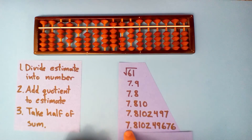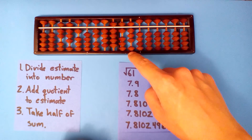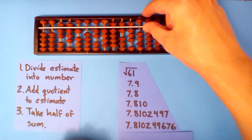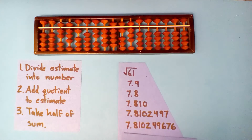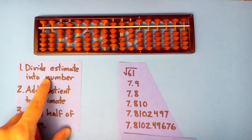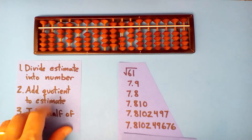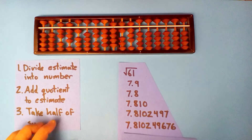The calculator answer is 7.810249676. So you can see this very last decimal is good — we would have rounded that 6 up to get 8. So it's not perfect, but it is very, very good. Try it the way I showed you before and try this a few times. The next thing we do will be something similar to this, so it's good to be able to do these pretty easily. Nice work, everybody. Thank you.